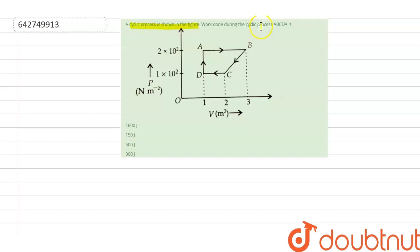work done during the cyclic process ABCD is. So to find out the work done, we know that work done in a cyclic process is equal to area under the curve.